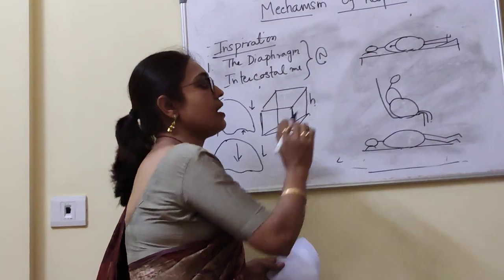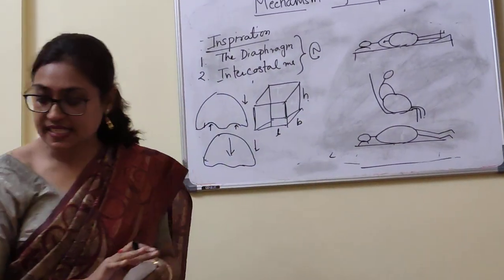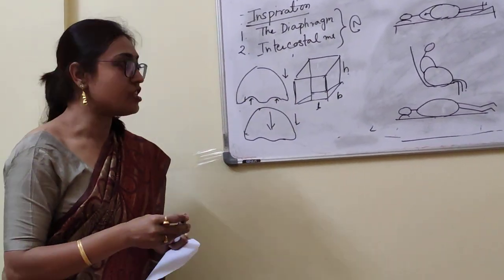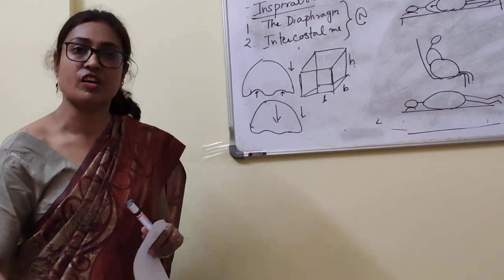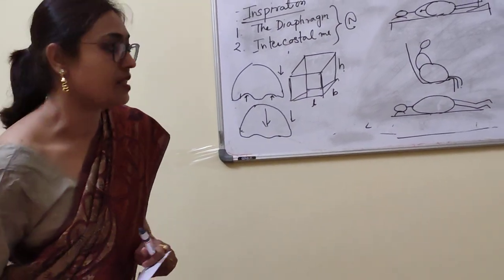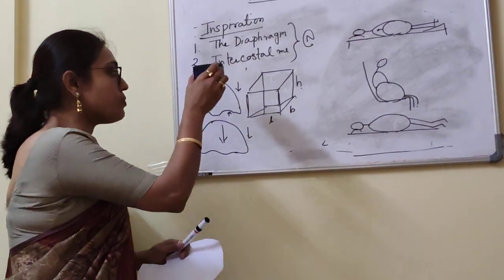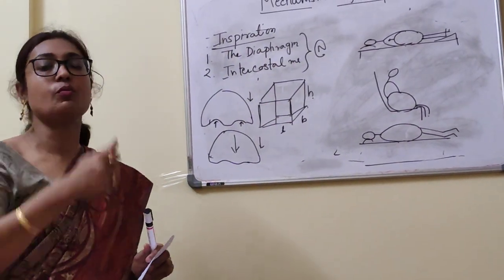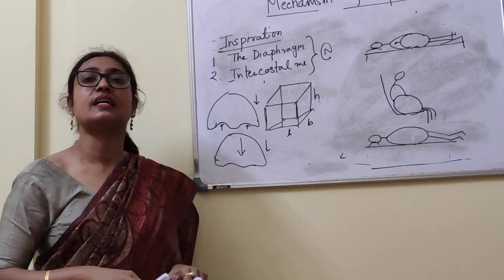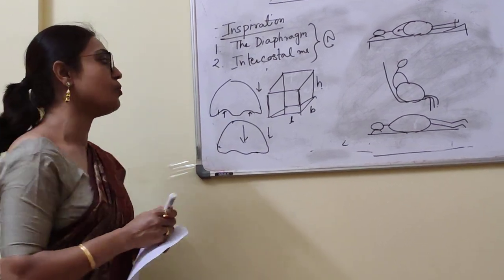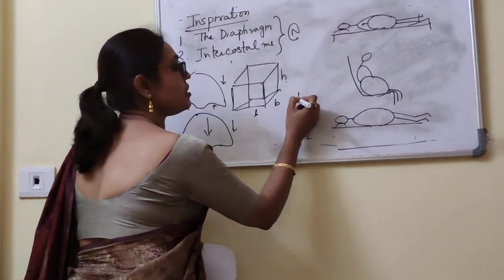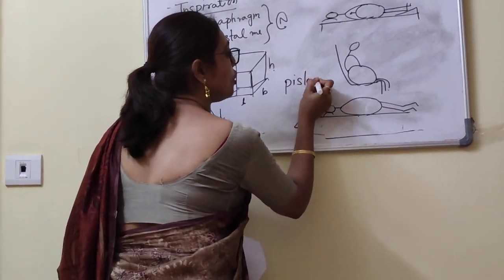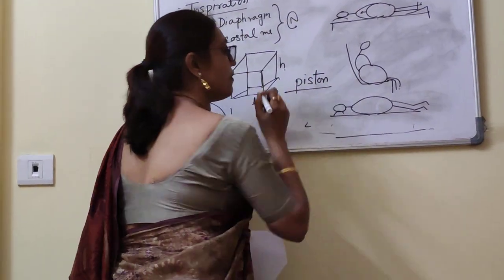This up-and-down movement of the diaphragm is known as the piston movement of the diaphragm. That is all about the diaphragm. Next, we switch over to the intercostal muscle.